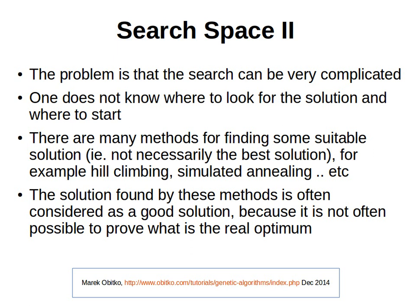The problem is that the search space and the search process itself can be very complicated — we don't know where to look for the solution or even where to start. In terms of problem solving via search, there are many methods. One of them is genetic algorithms, and another is called hill climbing or simulated annealing. These methods try to find the most suitable solution — not necessarily the real solution, but the best they can find. The solution found by these methods is often considered a good solution, because it's not always possible to prove what the real optimum is.